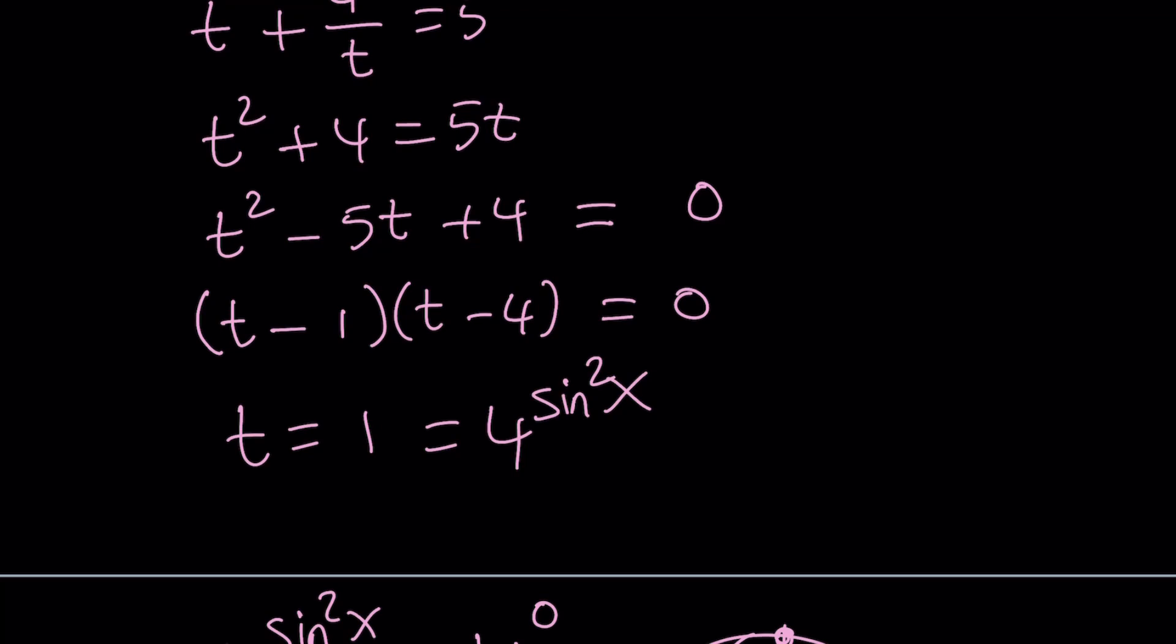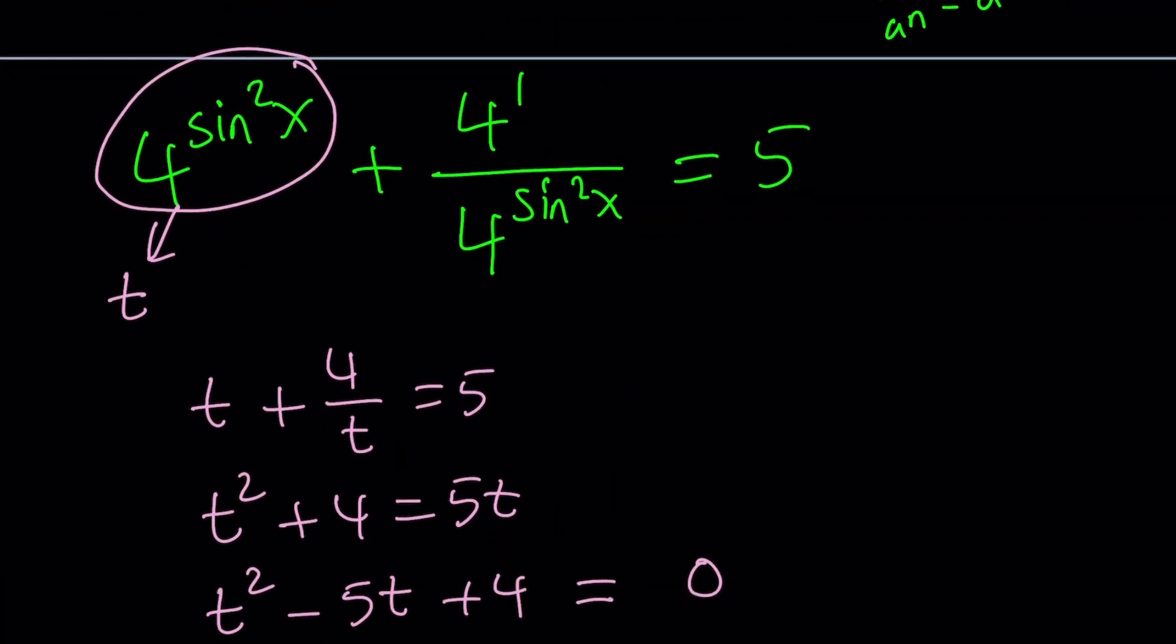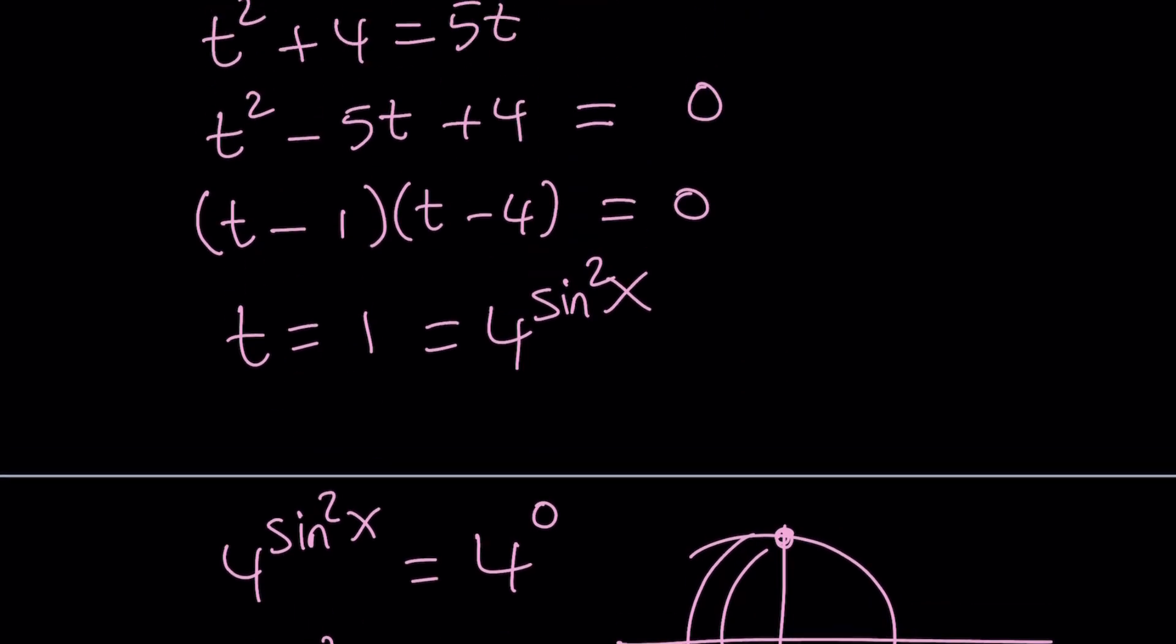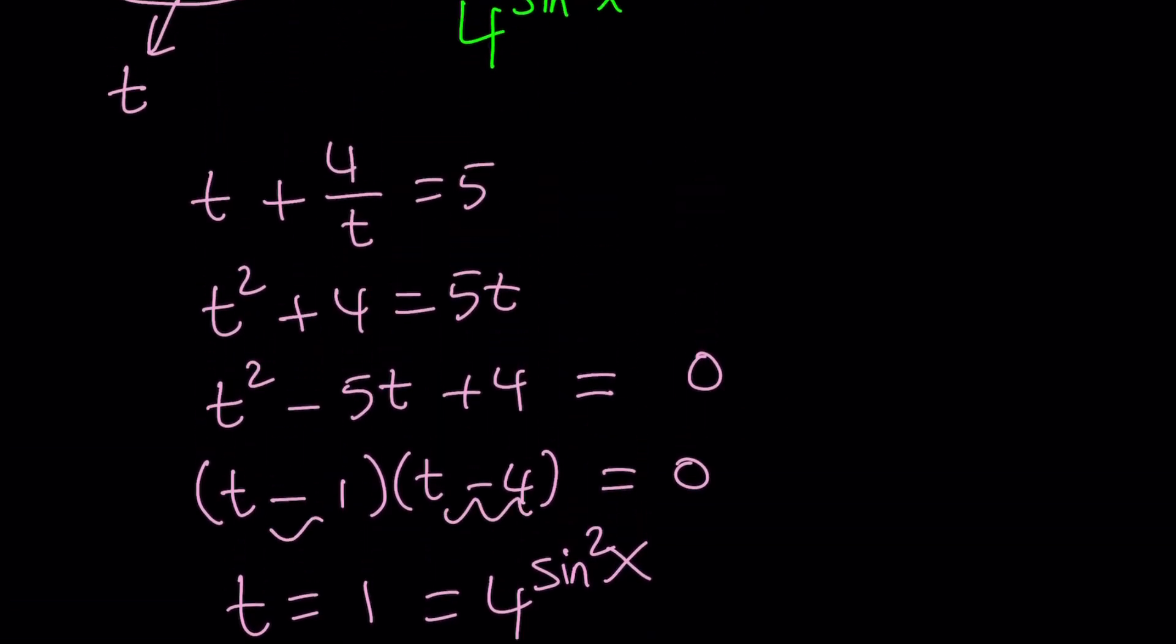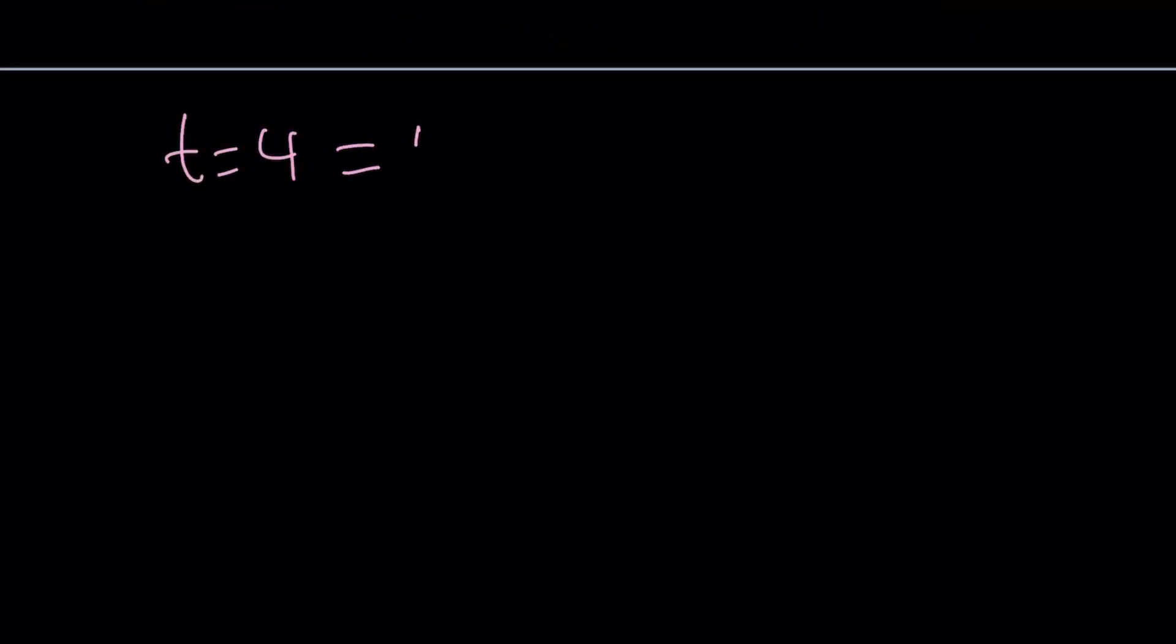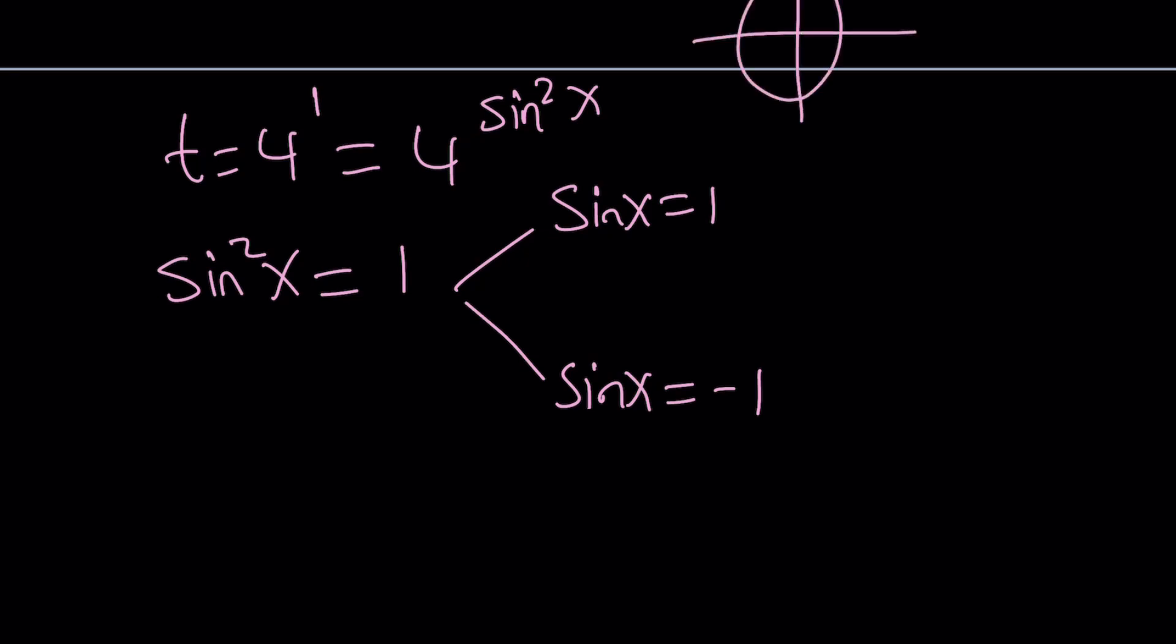Let's go ahead and take a look at the other one. By the way, we did not introduce any extraneous solutions because we didn't square both sides. So we've got to be careful about that. So the second t value we're going to be looking at is t equals 4 from here. This is t equals 1. Now we're going to look at t equals 4. Let's open a new page. t equals 4. What is t? 4 to the power sine squared x. And 4 can be written as 4 to the first power. From here, we get sine squared x equals 1. And this gives us two results. Sine x is either 1 or sine x is negative 1.